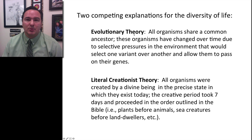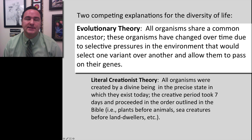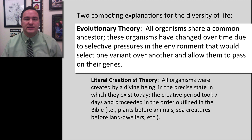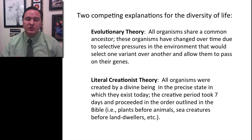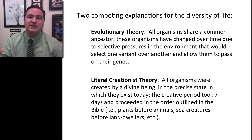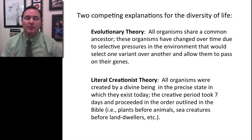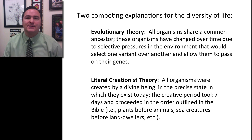The first possible explanation is evolutionary theory. This basically says that all organisms share a common ancestor, that these organisms have changed over time due to selective pressures in the environment that would select one variant over another and allow them to pass on their genes. Evolutionary theory and evolution itself is both a verb and a noun — it's the process of changing a little bit generation after generation, and it's also the outcome: the fact that there are organisms related to one another from common ancestors.